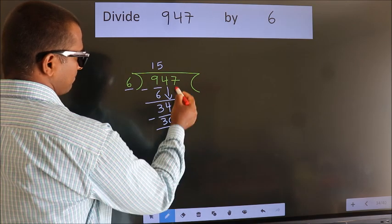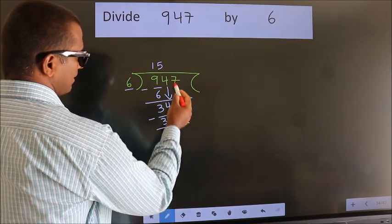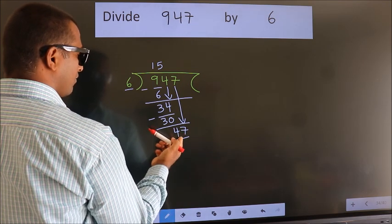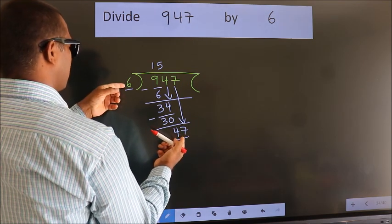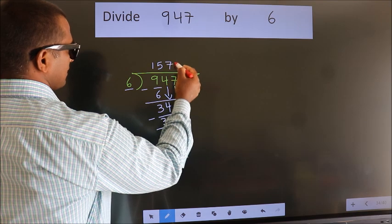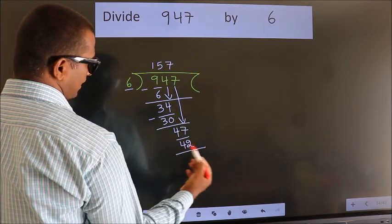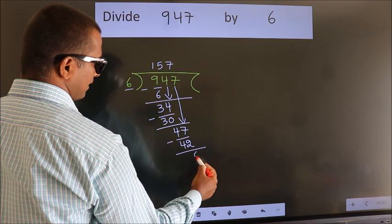After this, bring down the beside number. So 7 down. So 47. A number close to 47 in the 6 table is 6 times 7 is 42. Now we subtract. We get 5.